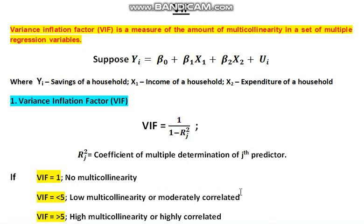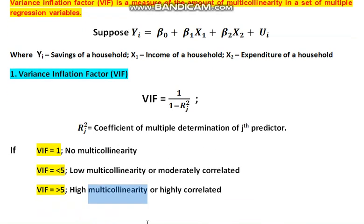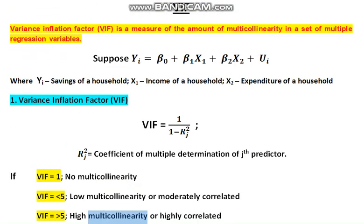And the third one, suppose if VIF is greater than or equal to 5, then we will say there is the problem of high multicollinearity. That means this X1 and X2 variables are highly correlated. Then of course if it is highly correlated, we know we will be suffering from the problem of multicollinearity.